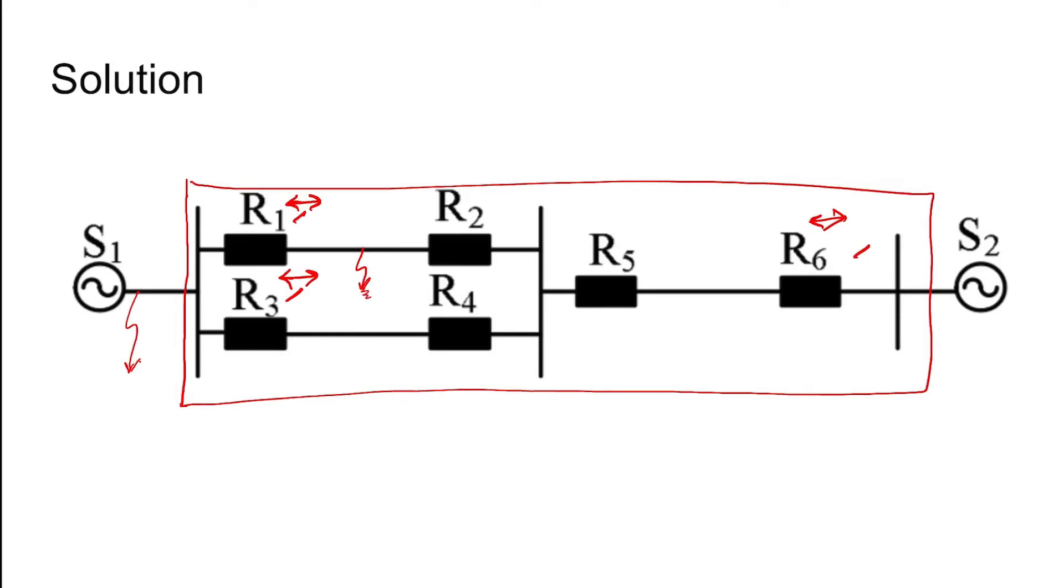But if you see, if a fault occurs here midway between this feeder line, then relay 2 will see a current in this direction. Similarly, if a fault occurs here, relay 4 will see a current in this direction, and if a fault occurs here, relay 5 will see a current in this direction.